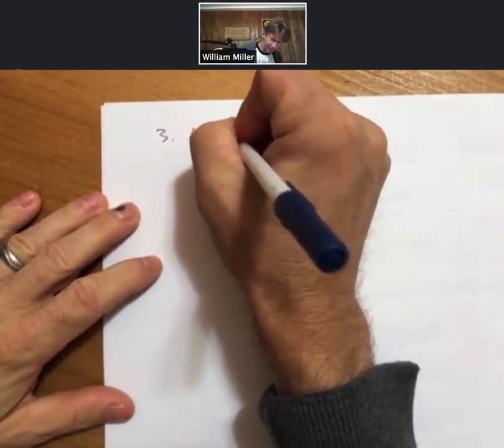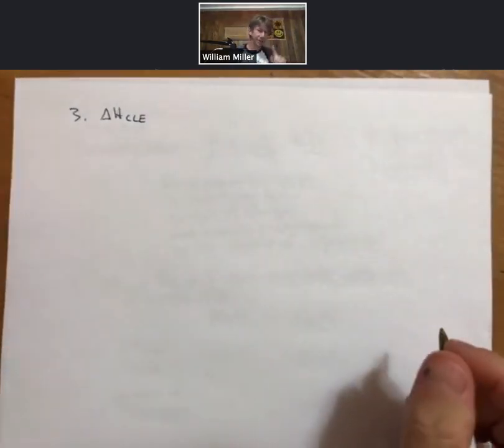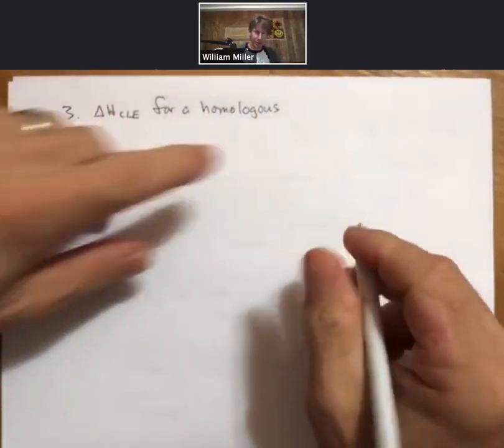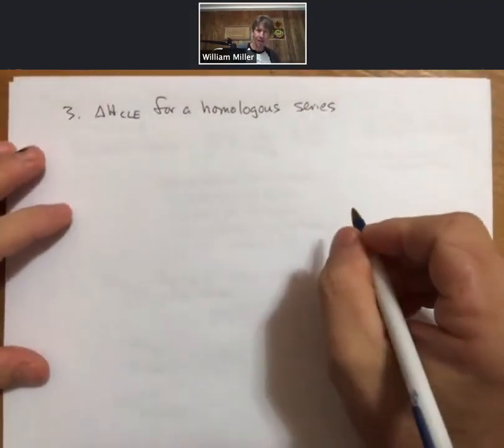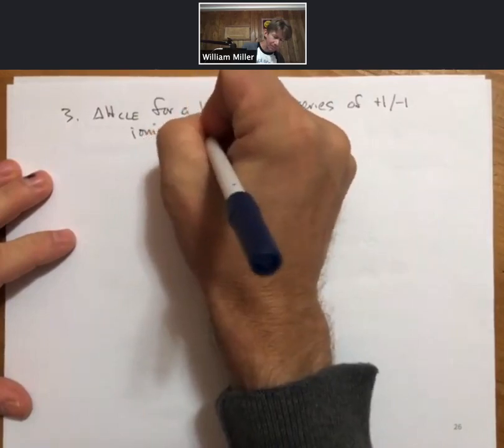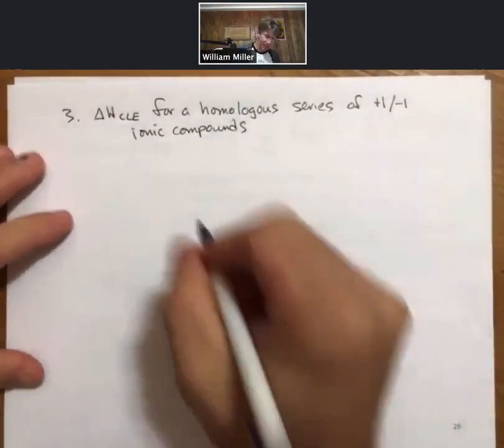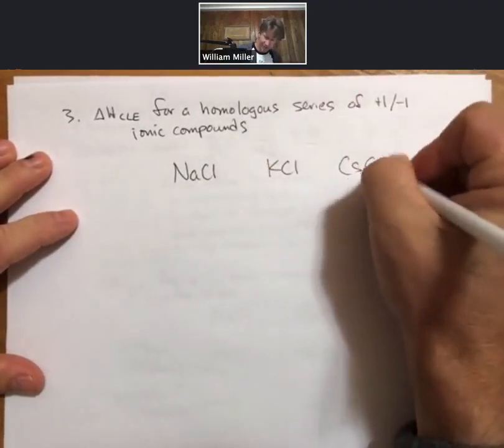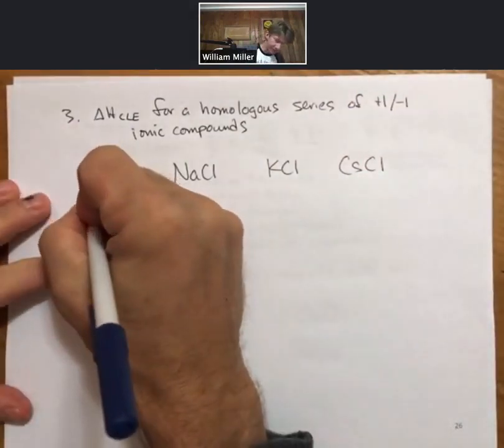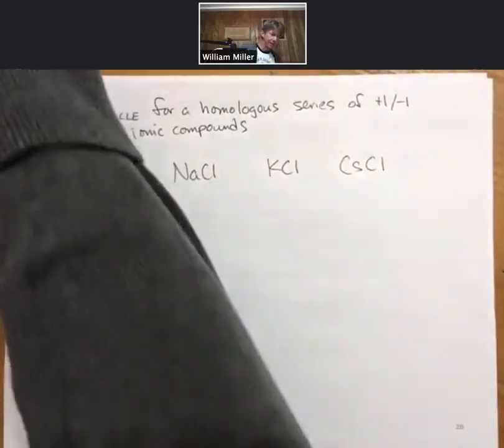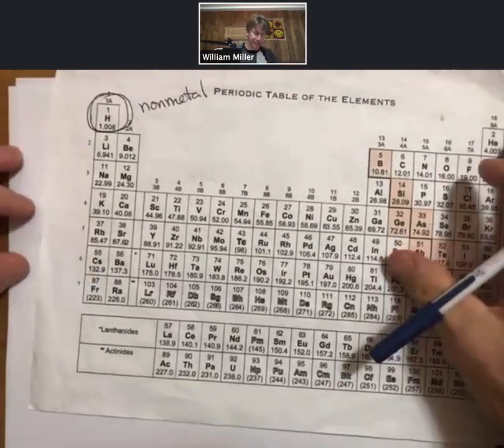For the next trend, delta H crystal lattice energy, now we have a homologous series. That means just a related series in a row, a homologous series of plus one minus one ions or plus one minus one ionic compounds. What I mean by that is now we're going to have sodium chloride, potassium chloride, and cesium chloride, and we're going to now look at their delta H crystal lattice energies in kilojoules per mole.